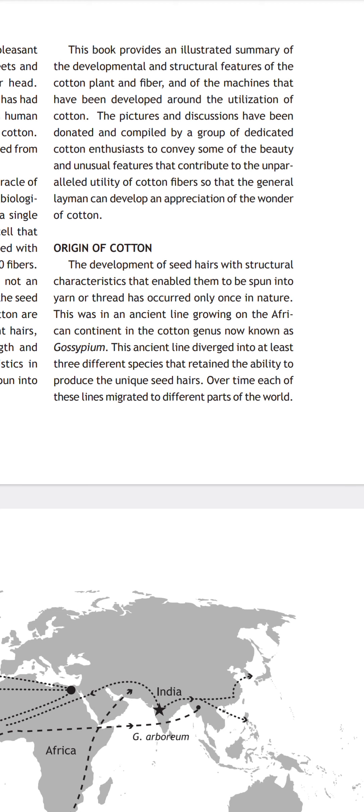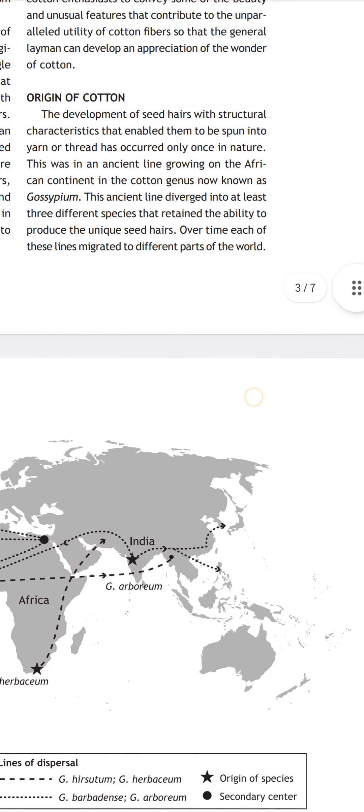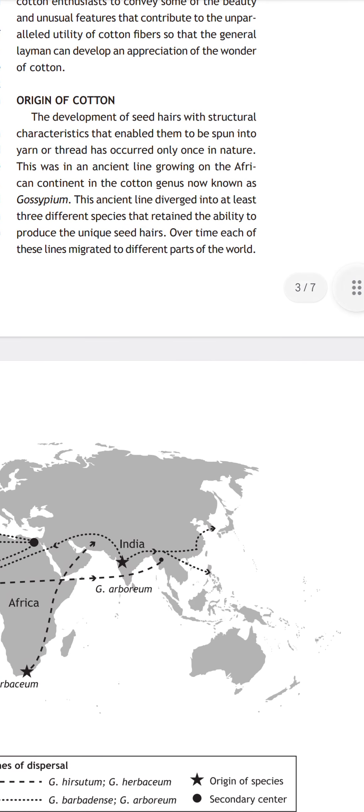Next we discuss the origin of the cotton plant. The development of seed hairs with structural characteristics that enable spinning into yarn or thread has occurred only once in nature. The ancient cotton genus from the African continent is known as Gossypium — the word Gossypium came from the African continent where it was anciently grown.